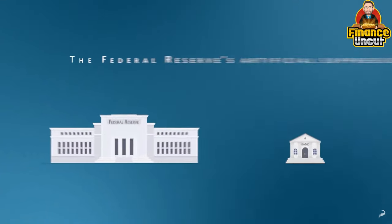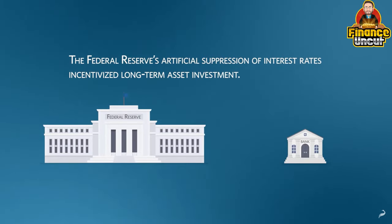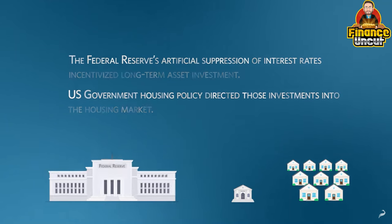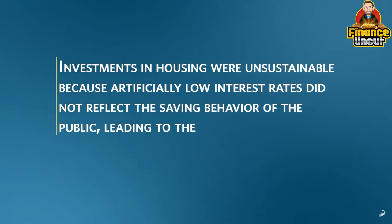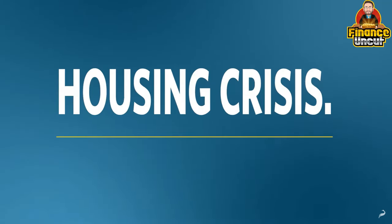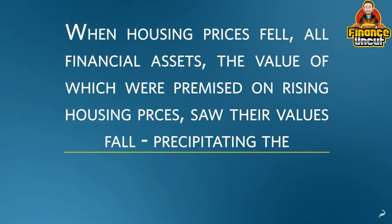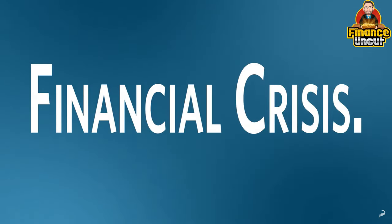Austrians argue that the Federal Reserve's artificial lowering of interest rates via credit expansion after 2001 created an incentive to invest in long-term assets, and U.S. government housing policy directed that credit into the housing market. Because the lower interest rates did not reflect the real saving behavior of the public, the investments in housing were ultimately unsustainable, leading eventually to the housing crisis. When housing prices fell, all other financial assets premised on rising housing prices fell as well, precipitating the financial crisis.